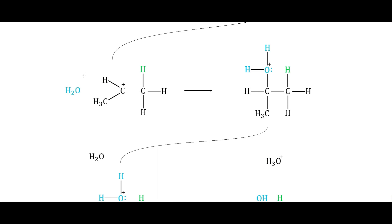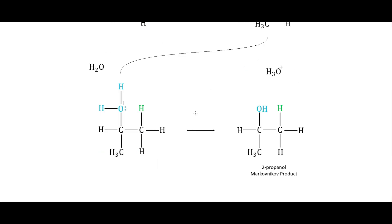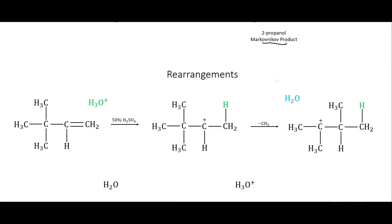The water will then quickly bond to the carbocation, and we end up with the water bound with a positive charge on the oxygen. Then we bring in yet another water, pull that hydrogen off, the electrons move down to the oxygen, and we have remade our hydronium ion. We've now put an OH on this propane chain in the Markovnikov product, making 2-propanol.